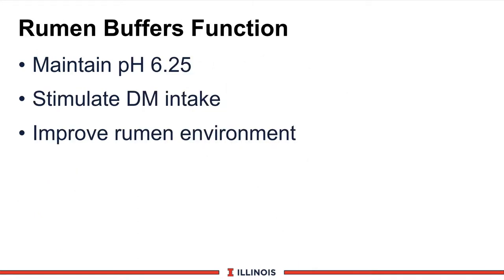When we look at the function of rumen buffers, its real function is to try to maintain the rumen pH at 6.25. For you chemists out there, that's a pKa, which means that's when it dissociates. So when the pH gets out of that range, it will chemically try to adjust it back to 6.25. If buffers are used properly, they should stimulate dry matter intake and improve rumen environment and fermentation profiles in the rumen.